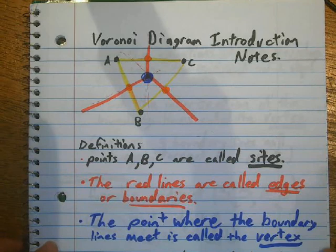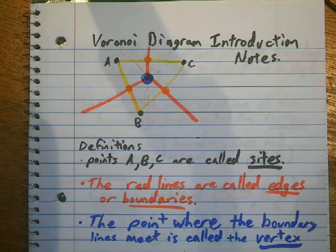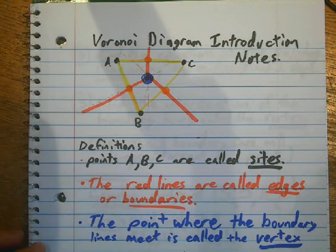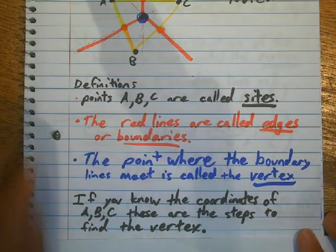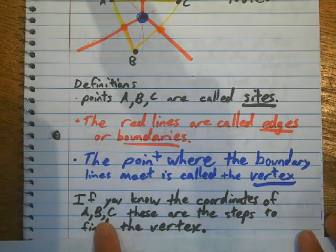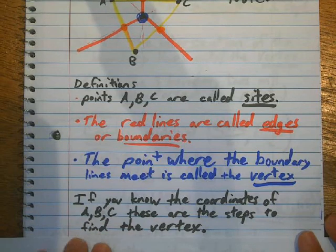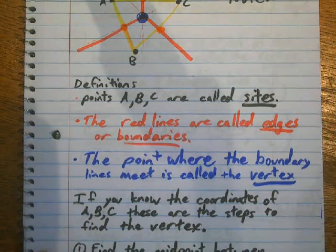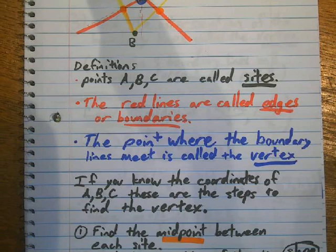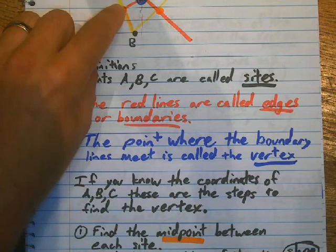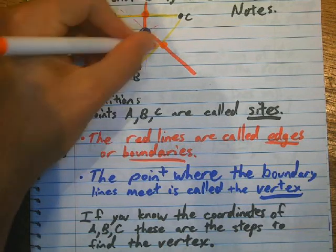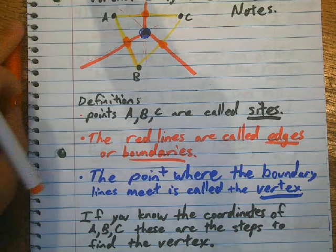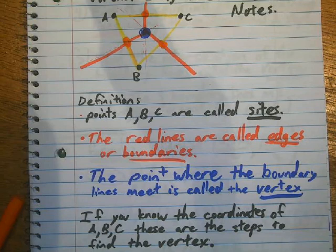Okay, so in order to find the vertex, we really have to do a lot of different steps. So if I know the coordinates of A, B, and C, here are the steps in order to find the vertex. First thing, I need to figure out the midpoint of each site. So, these orange dots here, those are the midpoints between each of the sites.